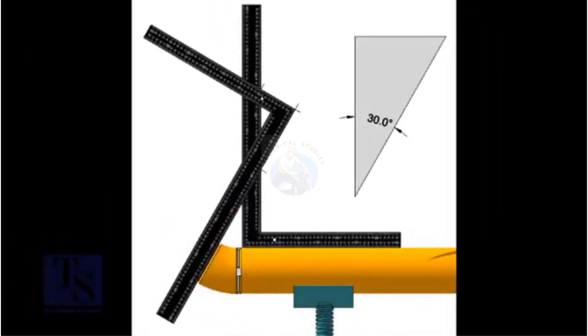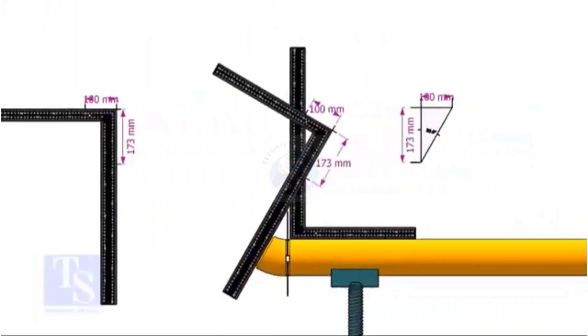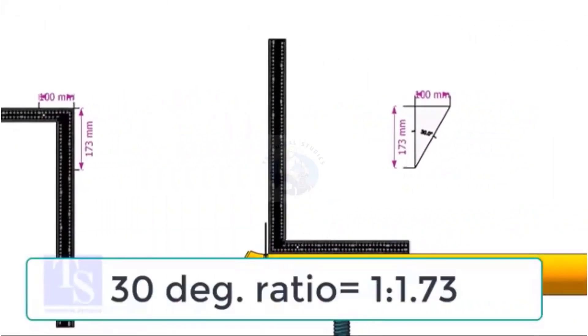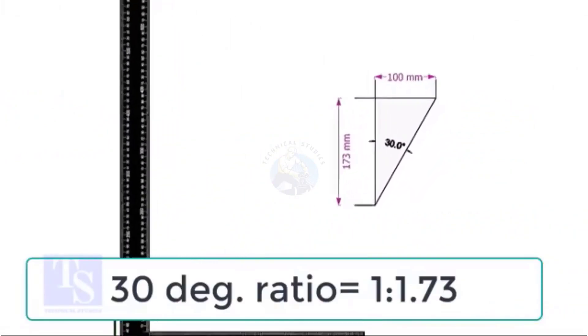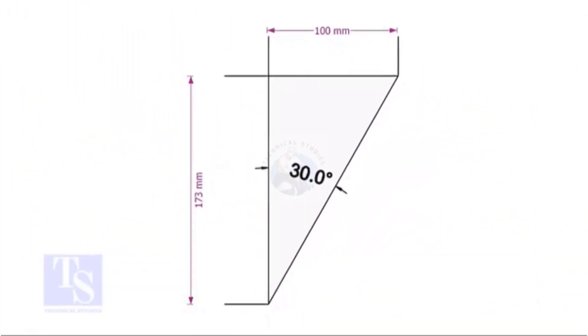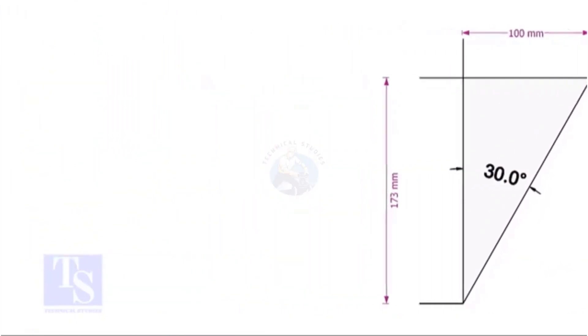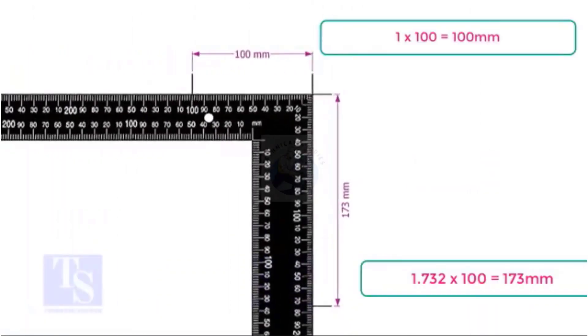Let us start with the 30 degree elbow fit up. For 30 degrees, the ratio of the set and the run is 1 is to 1.73. In this example, I multiplied both the set and the run with 100.